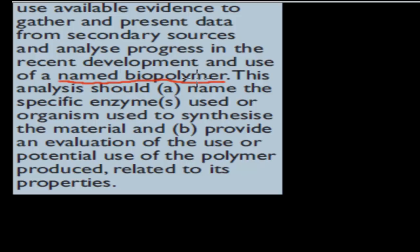A biopolymer is just a polymer produced by something biological — for example, an enzyme or a bacteria which helps produce this polymer. The other ones we covered, such as high density and low density polyethylene, didn't have an enzyme or bacteria to help make them, so they were not biopolymers. The ones we cover here are biopolymers because there will be an enzyme or organism that helps make them.